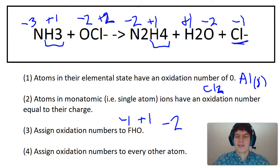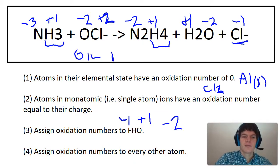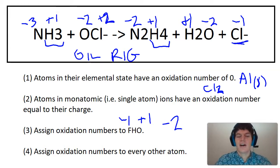And then, all right, it looks like we're done assigning oxidation numbers. Now we need to think about oxidation and reduction. The way I like to remember oxidation and reduction is the acronym OIL RIG, which stands for oxidation is loss of electrons, and RIG, reduction is gain of electrons.